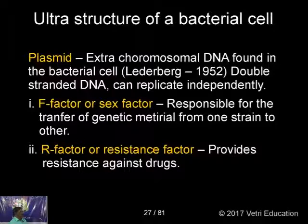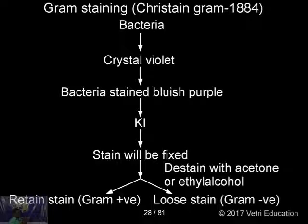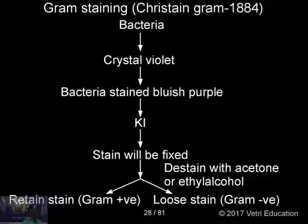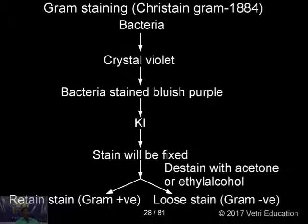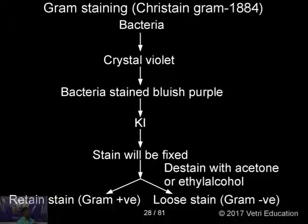Christian Gram in 1884 tried to classify bacteria based on cell wall composition. Some bacteria have more peptidoglycans in the cell wall, others have very little. Based on this, he developed a differential staining technique — staining with one or more chemicals. First, he collected a culture of bacteria on a slide and added crystal violet solution, turning the bacteria bluish-purple. Then he slowly washed and added potassium iodide, which retains the previous stain.